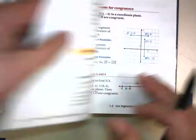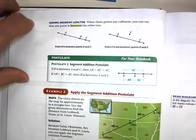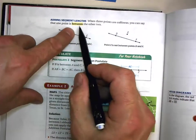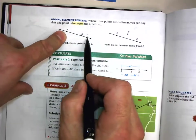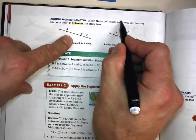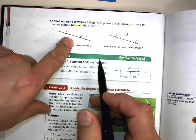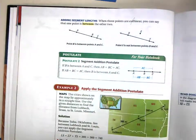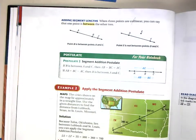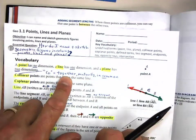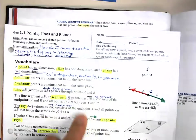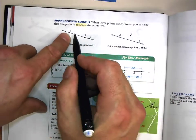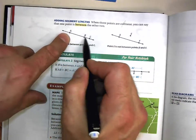Adding segment lengths: When three points are collinear, you can say that one point is between the other two. Remember, collinear—co means common or together or mutually. So collinear means they are together, these points share mutually the same line.